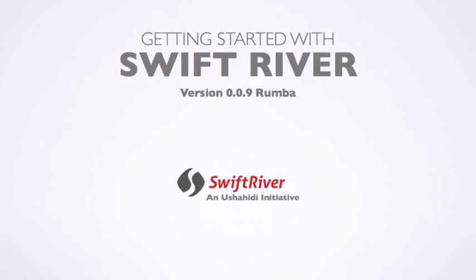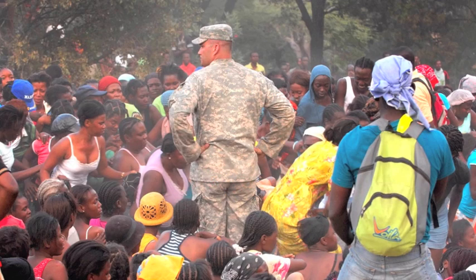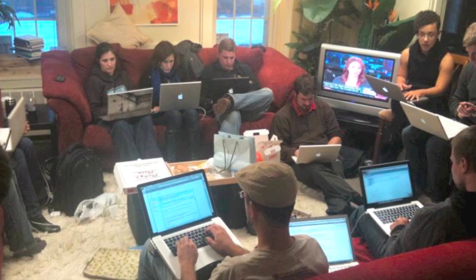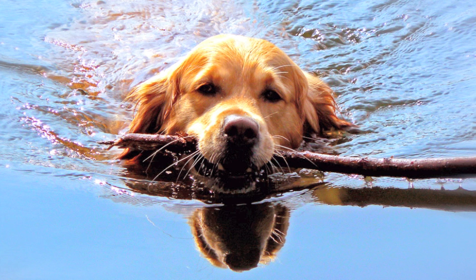Getting started with Swift River. During the recent Haiti earthquakes, Ushahidi, which maps reports of incidents during emergencies, was overwhelmed with data. Tens of thousands of reports came in from Twitter, email, blogs, and the web, each report needing to be verified by humans. We were swimming in a river of information, clumsily and inefficiently.